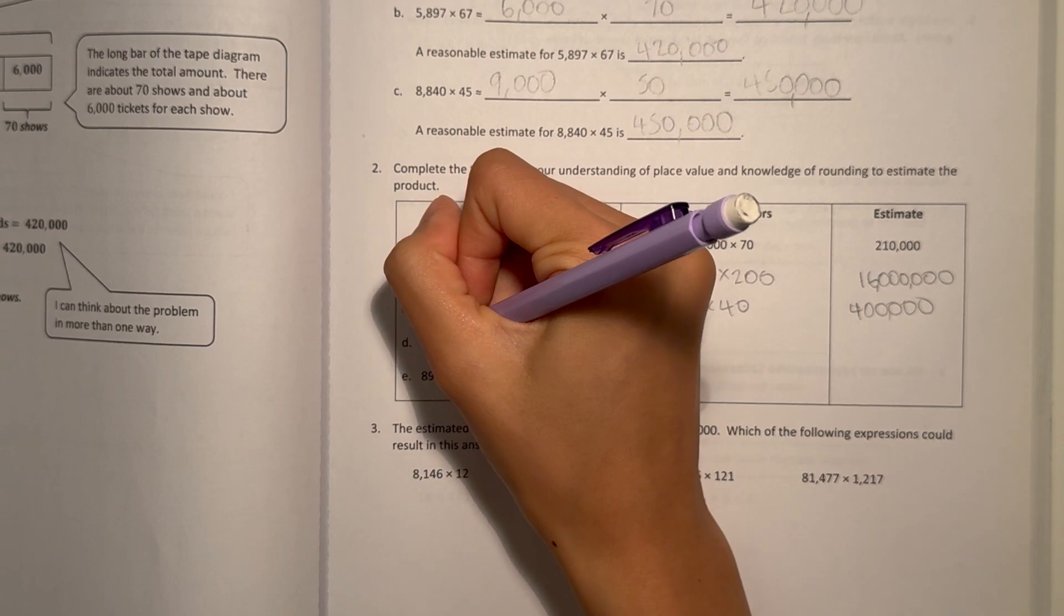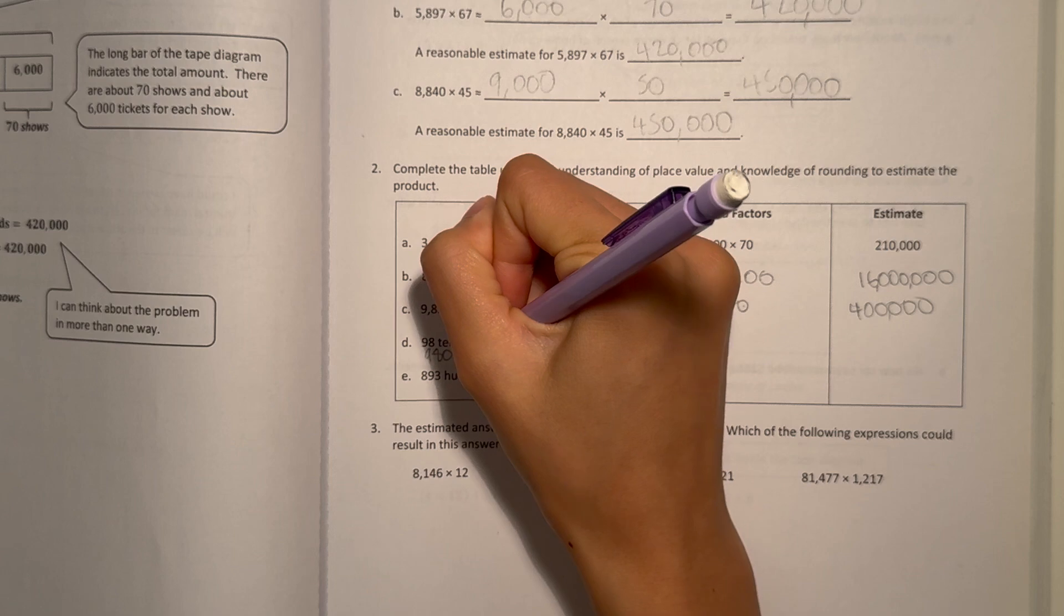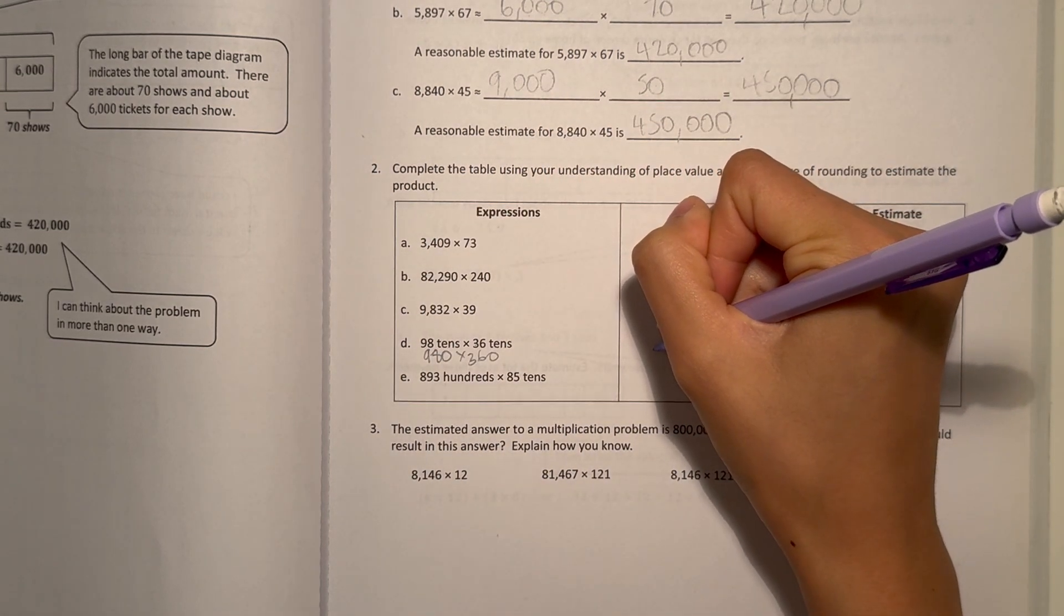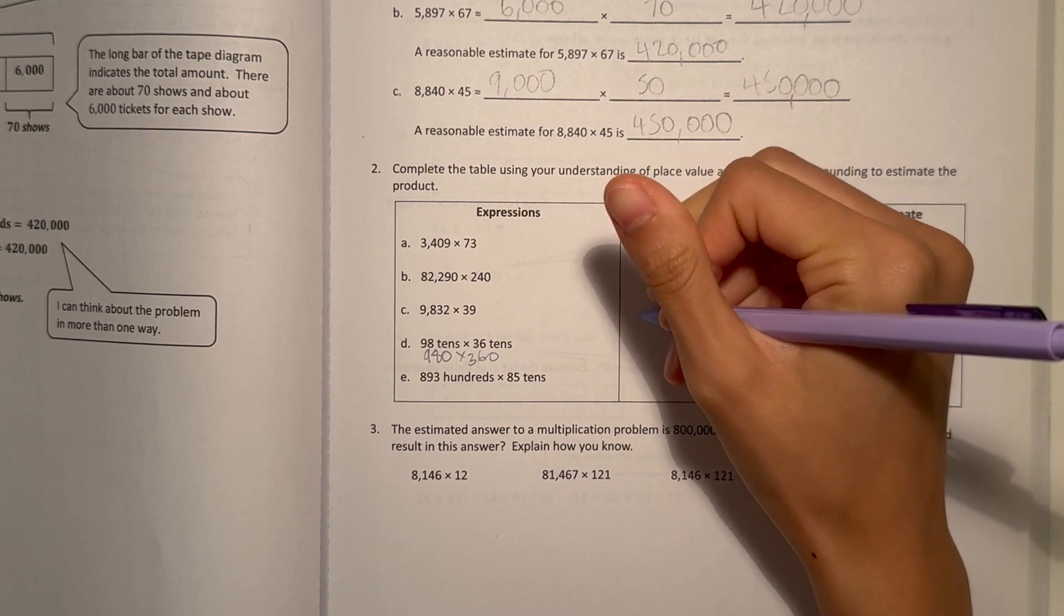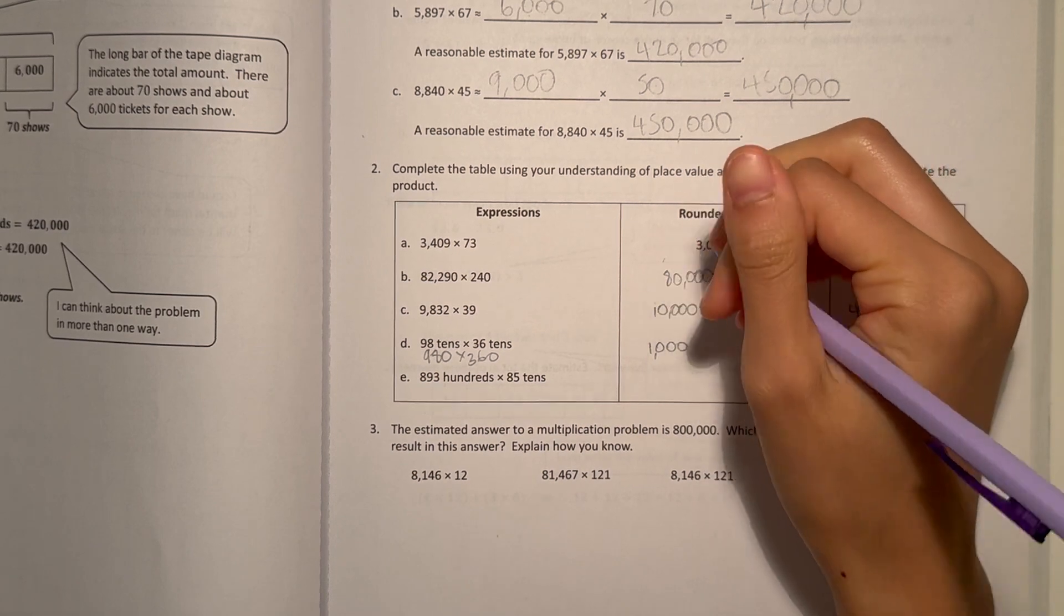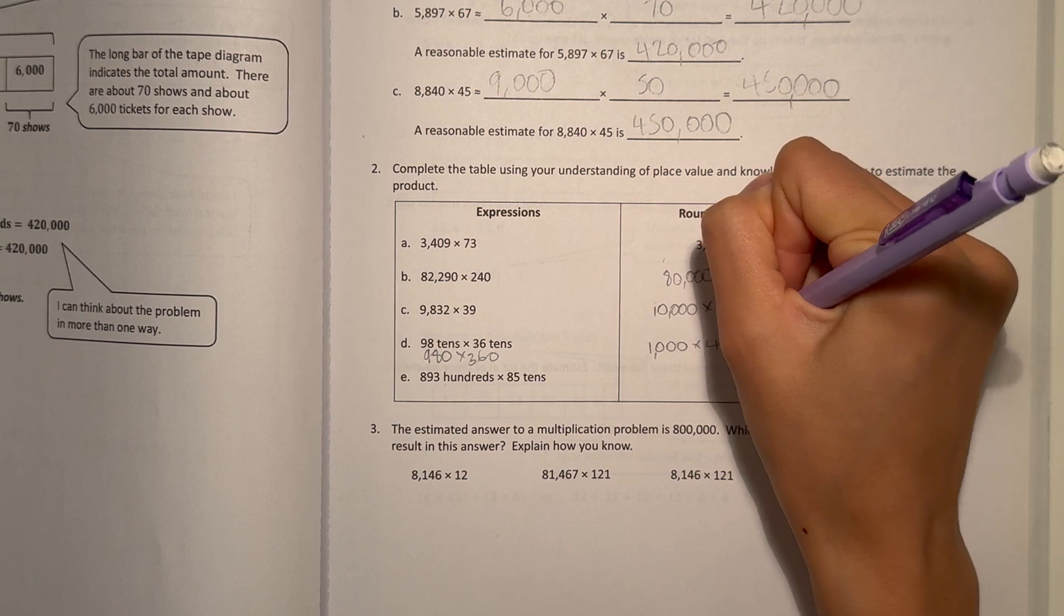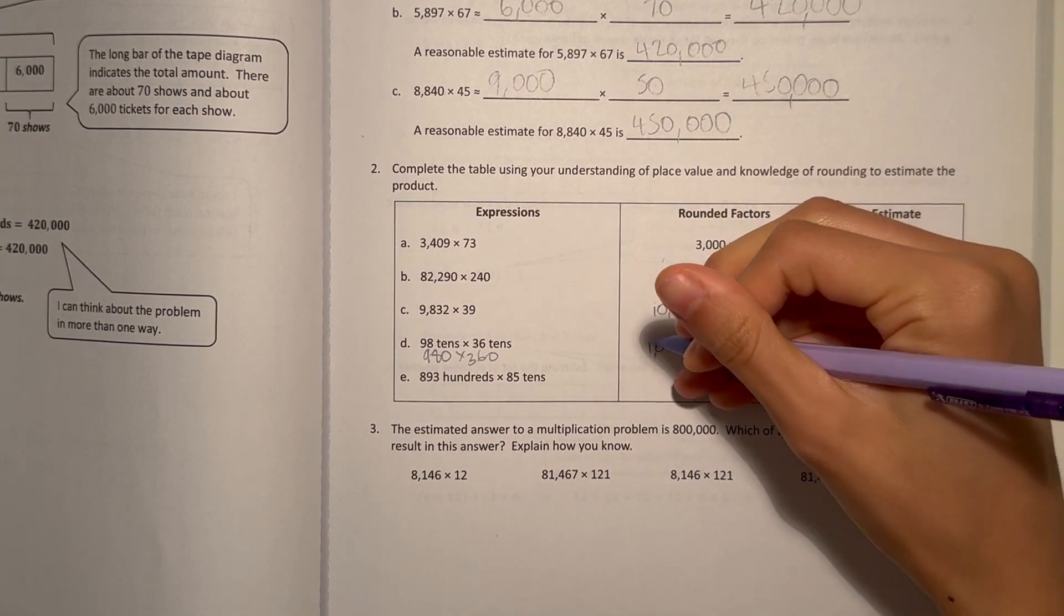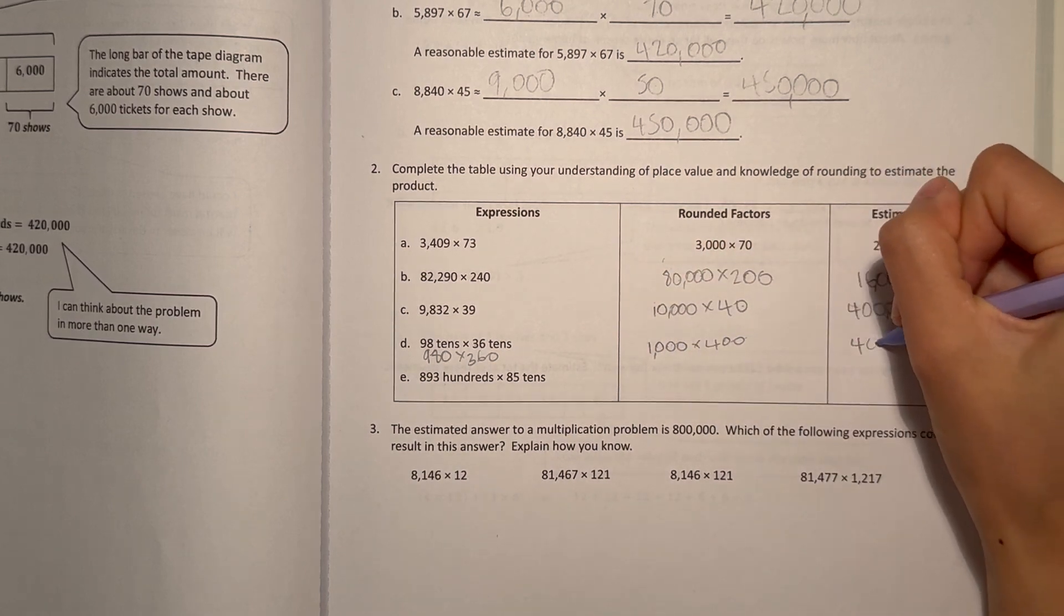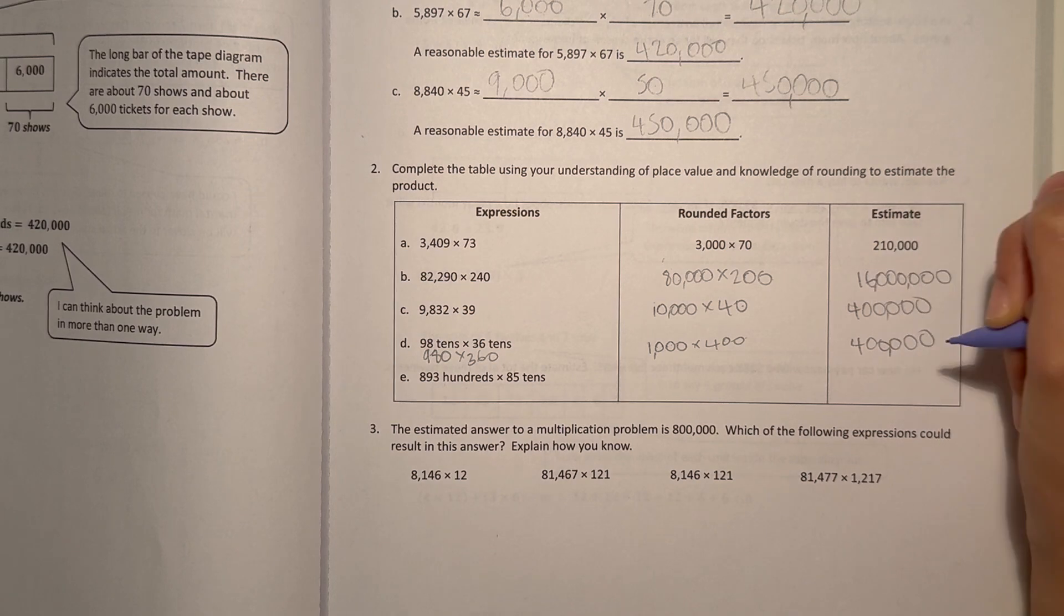D, 98 tens. That's 980 × 36 tens, times 360. To the nearest hundreds, 980 would go up to 1,000, and then 360 would go up to 400. 1 × 4 is 4, plus the 5 zeros. Our answer is 400,000.